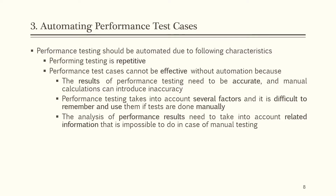The third step is automating performance test cases. Performance testing should be automated due to following characteristics. Performance testing is repetitive. Performance test cases cannot be effective without automation because results of performance testing need to be accurate and manual calculations can introduce inaccuracy. Performance testing takes into account several factors — throughput, response time, tuning, competitive analysis, and capacity planning — and it is difficult to remember and use them if tests are done manually. The analysis of performance results needs to take into account related information that is impossible to do in case of manual testing.